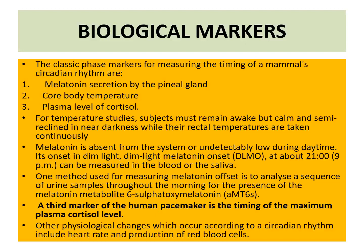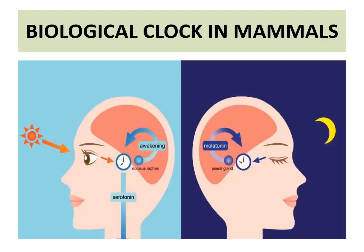Other physiological changes that occur according to circadian rhythm include heart rate and production of red blood cells. During daytime, the eyes sense light and wake up the SCN. An important hormone produced during the day is serotonin.